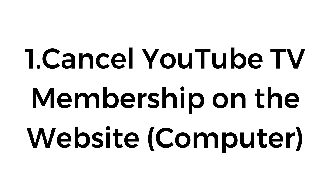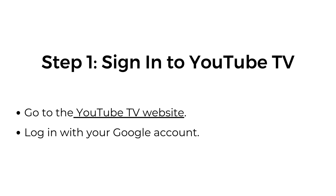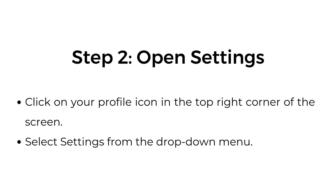Number one: cancel YouTube TV membership on the website. Step one, sign in to YouTube TV. Go to the YouTube TV website and log in with your Google account. Step two, open settings. Click on your profile icon in the top right corner of the screen.